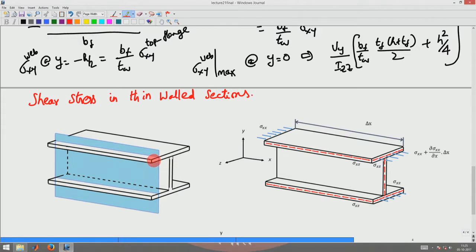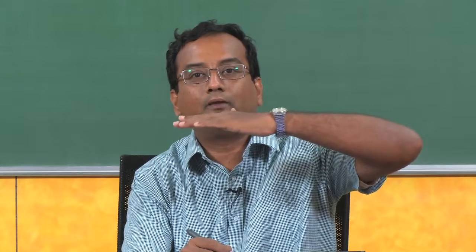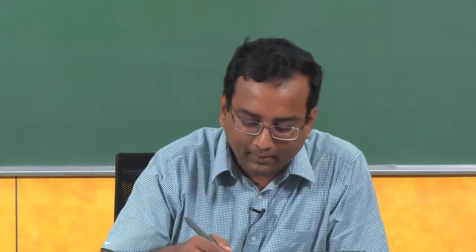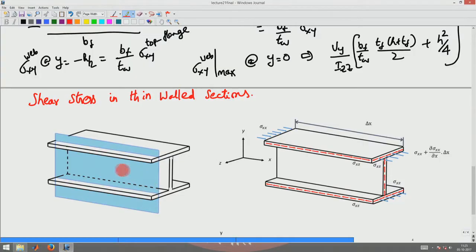You have to take the entire flange thickness area rather than sectioning the flange along a plane parallel to the xz plane. Now you are cutting a plane parallel to the yz plane — that is, a vertical plane of cut rather than a horizontal plane of cut.